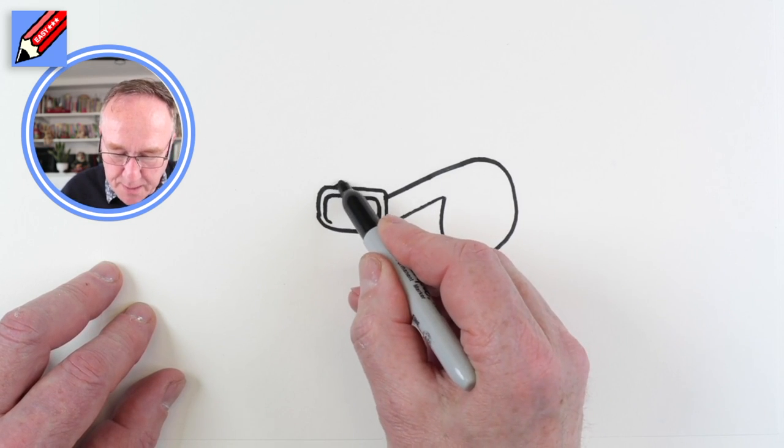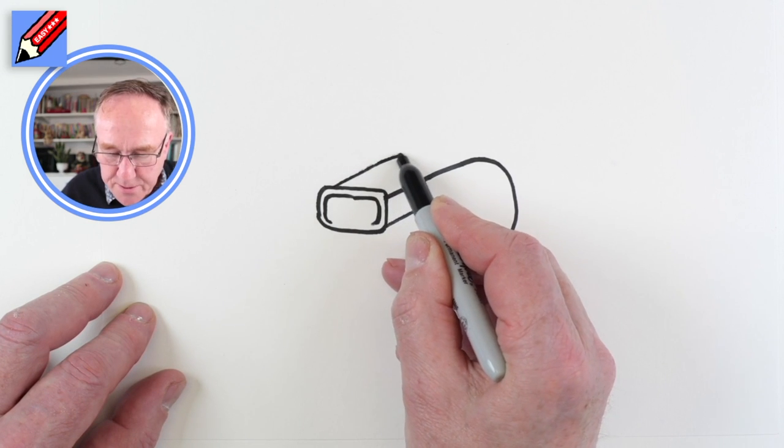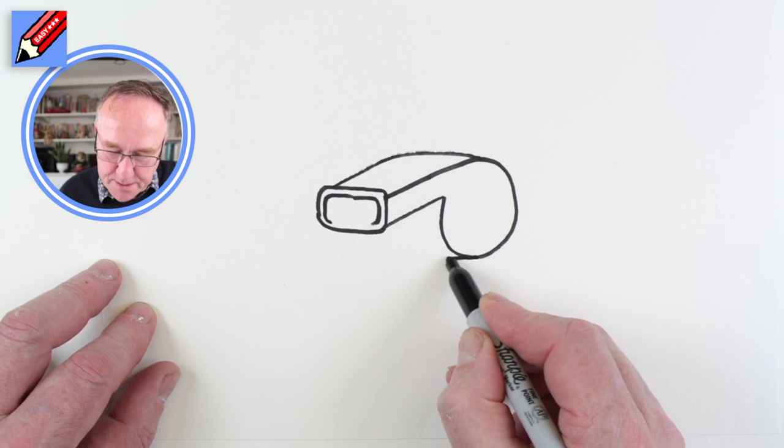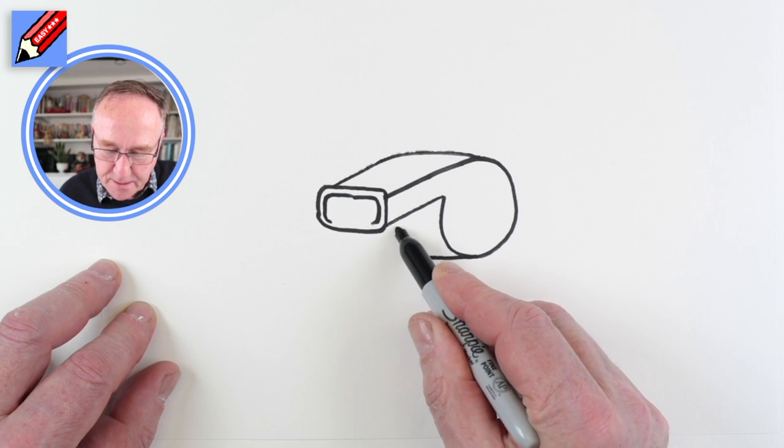Then we want to be about here going straight straight straight and then across, and then here we want to go straight straight straight and then curl around.